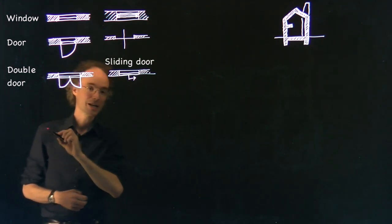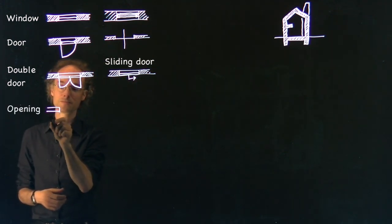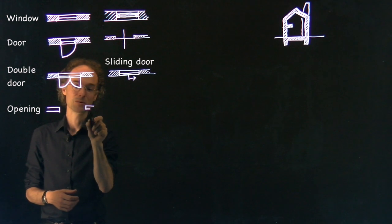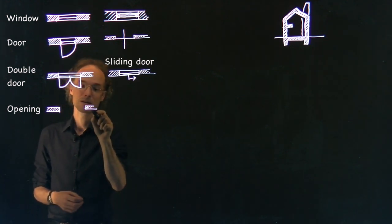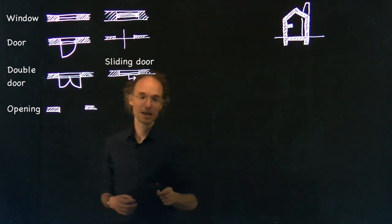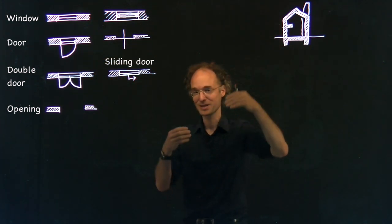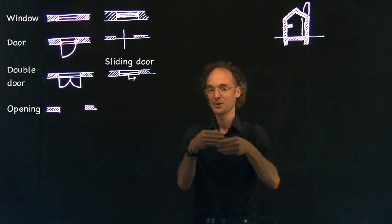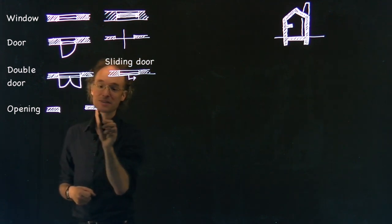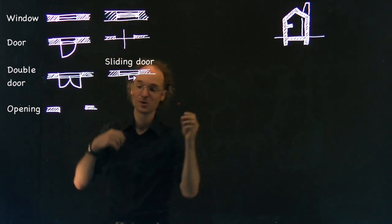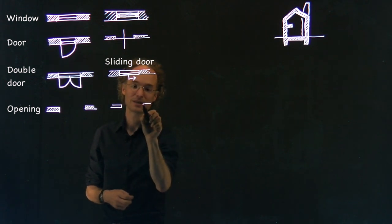Sometimes you have an opening in a wall but without a door. It can be very simple. You just have the wall and it stops where the opening is. In architectural drawings, if something is above your head, so it's outside of the plane you're actually drawing but it is there, if in this opening there would be a part of the wall above your head you indicate this with a dashed line.